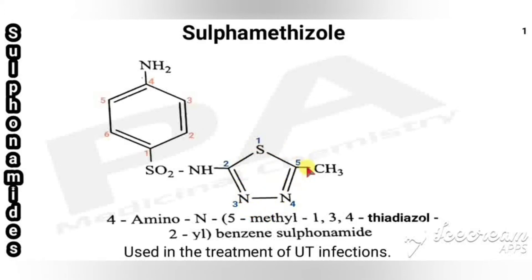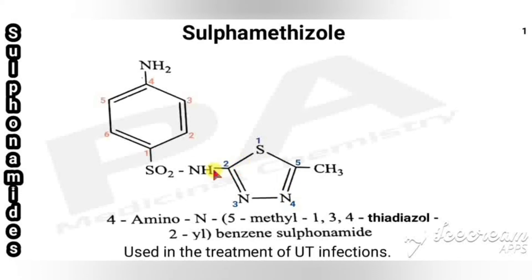The ring is called 1,3,4-thiadiazole, having a methyl group at the fifth position. The chemical name is: 4-amino-N-(5-methyl-1,3,4-thiadiazol-2-yl)benzenesulfonamide. The parent here is benzenesulfonamide, with an amino group at the fourth position, and the nitrogen connected at the second position of the thiadiazole ring.